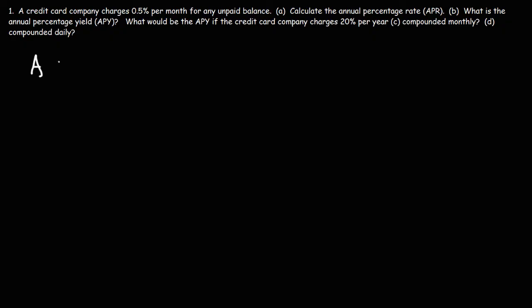So the APR, or the annual percentage rate, is equal to the periodic rate, which we'll call capital R, times the number of periods per year, which is N. So for this particular credit card company, they charge 0.5% per month. So that is the periodic rate.